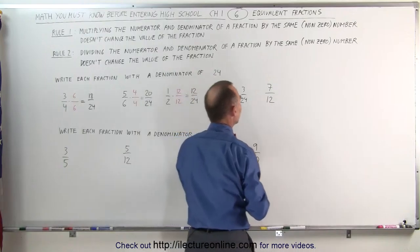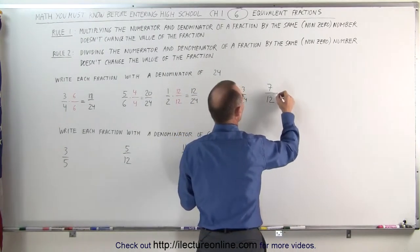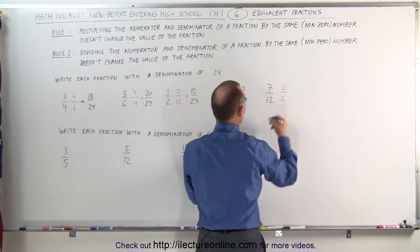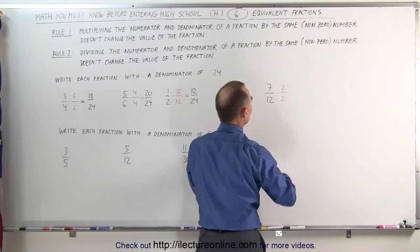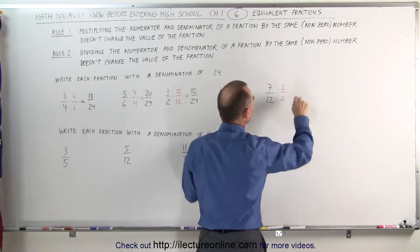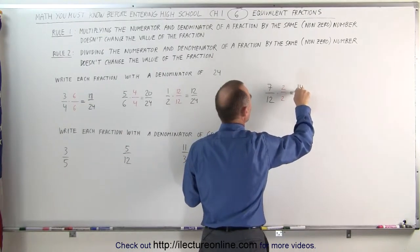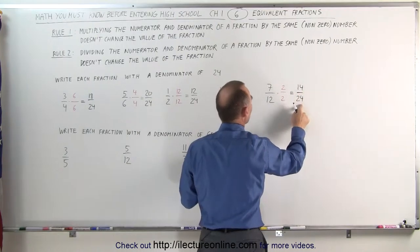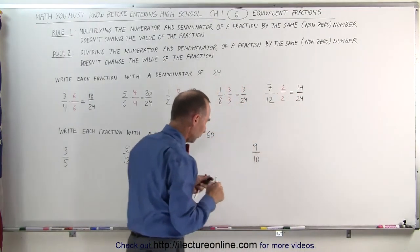And finally, looking at 7 over 12: if I multiply both the numerator and the denominator by 2, I can see that 2 times 12 is 24. This becomes 14 divided by 24, which is an equivalent fraction to 7 divided by 12.